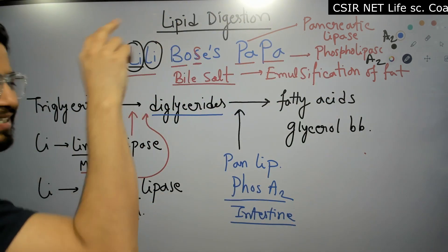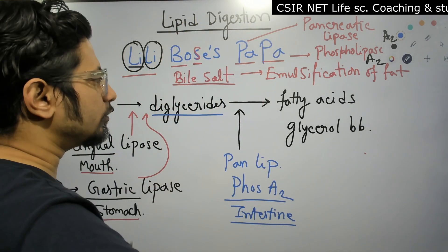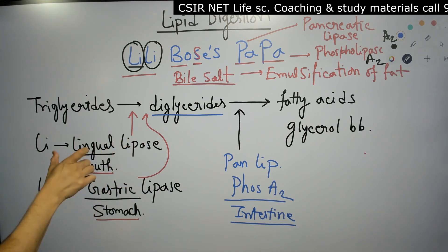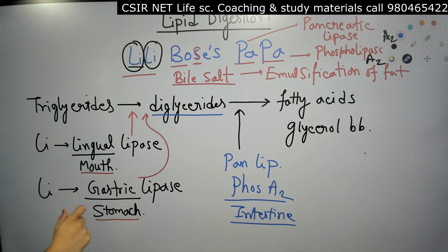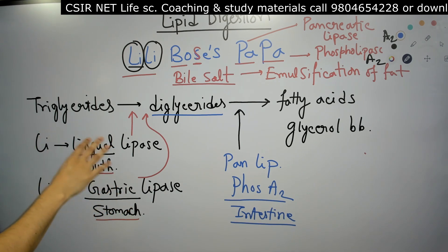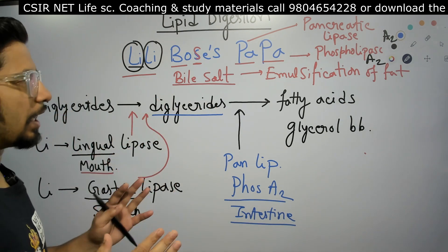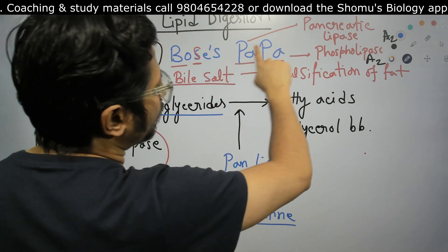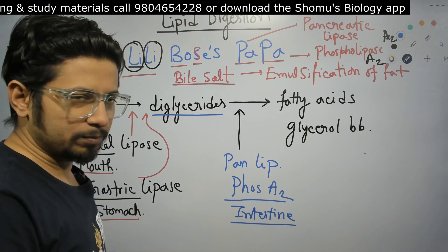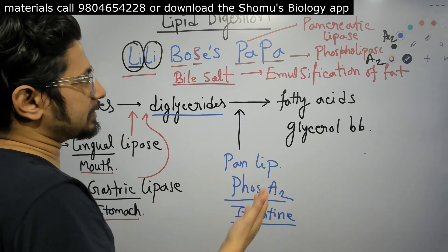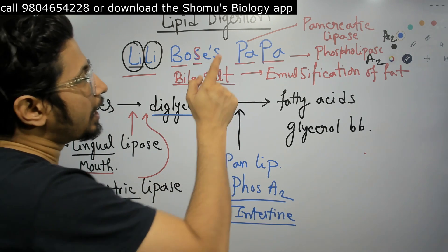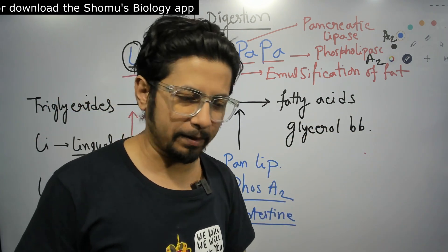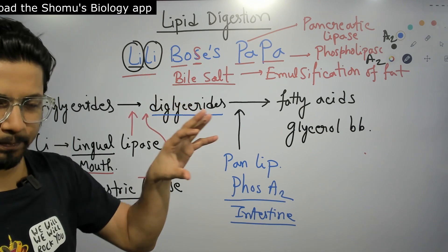So this one simple sentence — 'Lily Boss's Papa' — gives us all the enzymes: 'Li' for lingual lipase (digestion in the mouth), 'Li' for gastric lipase (digestion in the stomach, breaking triglycerides into diglycerides), 'Bo/S' for bile salt emulsification of fat, 'Pa' for pancreatic lipase acting in the small intestine, and the final 'Pa' for phospholipase A2 breaking down phospholipids into fatty acids and glycerol backbones.